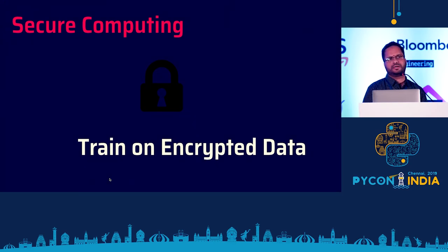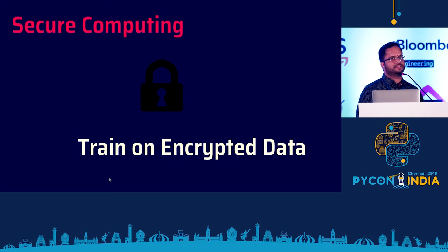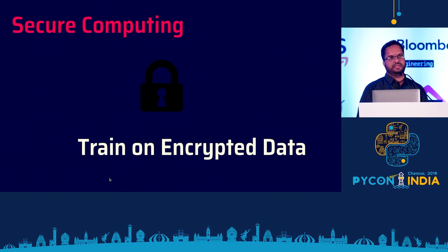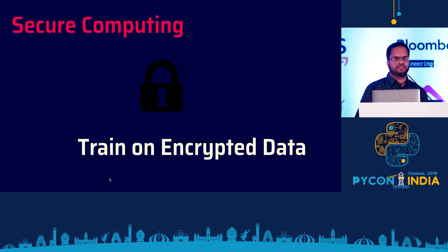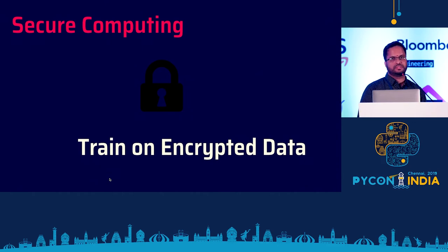Sometimes to compensate for model poisoning, you might be better off sending the data to the server itself, but you don't want to send the actual data — you want to encrypt it and send it. There are ways to send only encrypted data, train the model on encrypted data, and update models on encrypted data. One common approach is homomorphic encryption, which is quite popular for doing this.